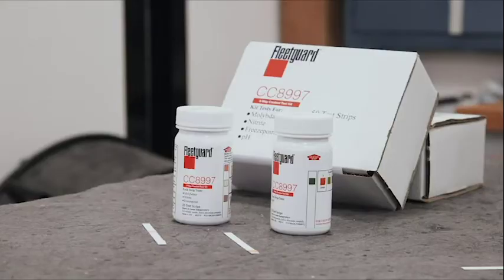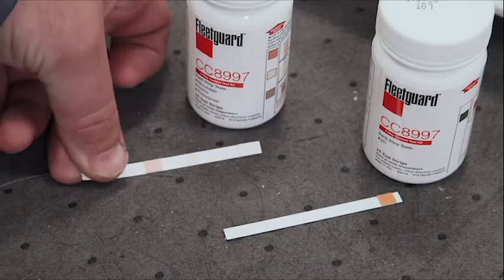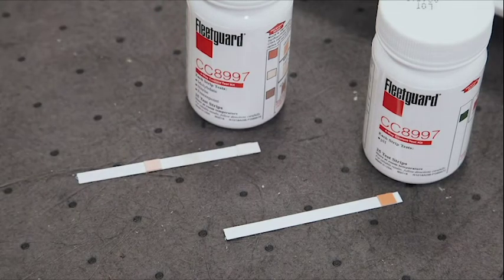FleetGuard four-way test strips are part number CC8997, and they're specifically for testing ES Complete OAT and FleetCool OAT coolants, as they don't contain nitrite. There are two sets of test strips used in the four-way test.